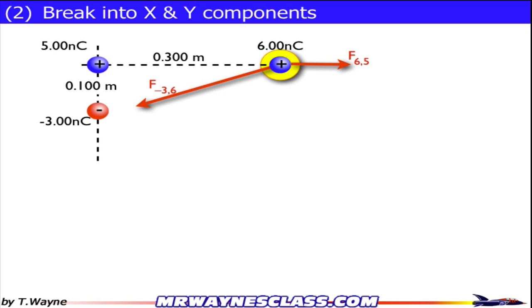Next up, I'm going to break things into x and y components, because my forces are not perpendicular to each other. So the F65 I'll leave alone, but the F negative 3-6, I need to make that the hypotenuse of a triangle with a vertical and horizontal component. So here's the vertical component, and here's going to be the horizontal component. So I'm going to use trig to find out the lengths of these two forces. There's theta, there's F negative 3-6 sine theta, and F negative 3-6 cosine theta.